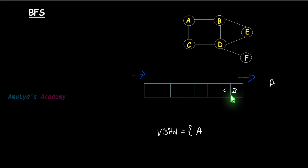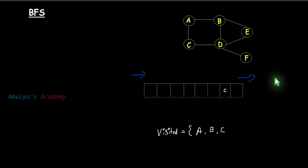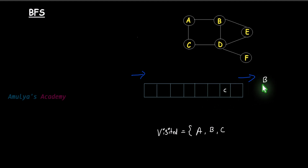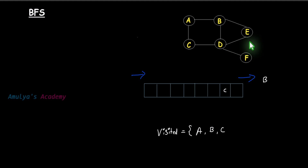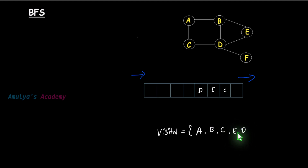Mark the unvisited adjacent nodes as visited — B is visited, C is visited. Next, remove the node from the front of the queue, which is B. The removed node is now B. Add all unvisited adjacent nodes of B — D and E. I'll add E first, then D. Mark them as visited — E and D are now visited.